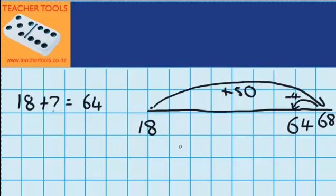So now I've recorded my jumps. I jumped up 50, and then I had to jump backwards 4. So in total I jumped 46. So the answer to this question is 18 plus 46 is 64.